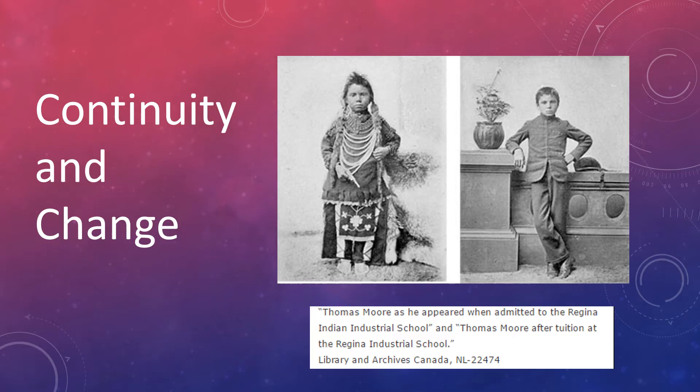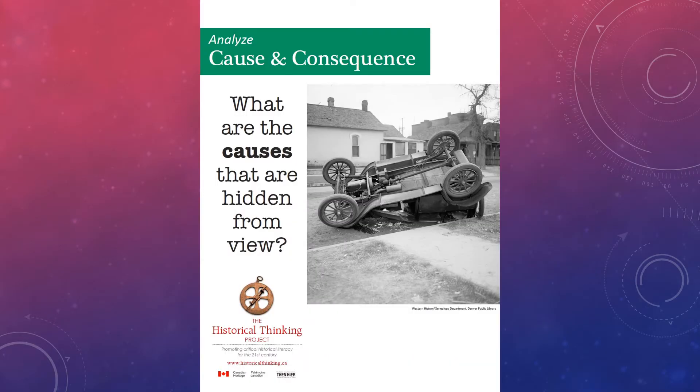When you compare a point in history to the present, or one point in history to another point in history, and you compare and contrast the situations and the context, some parts are the same and other parts are different. The next concept is cause and consequence: what are the causes that are hidden from view?